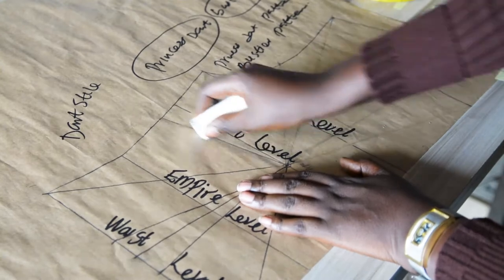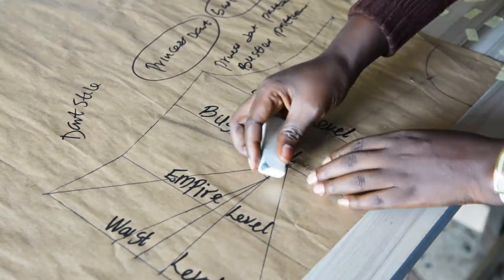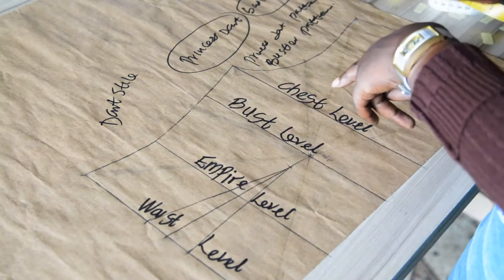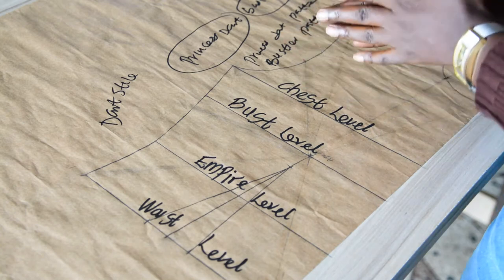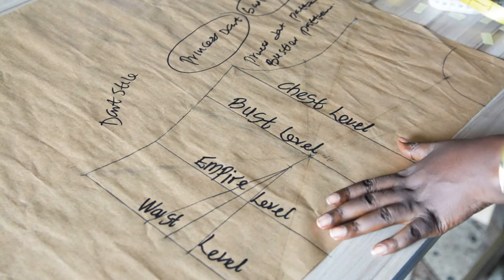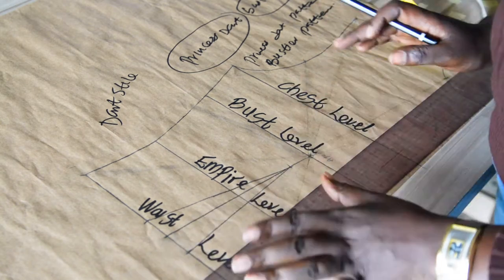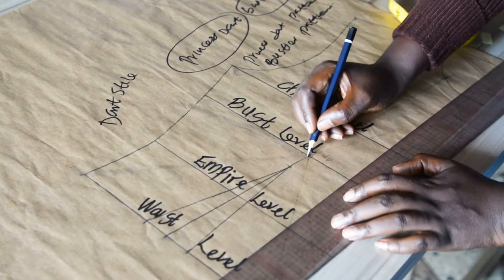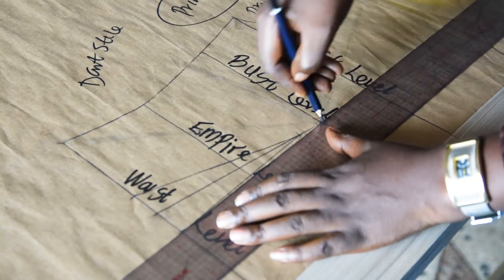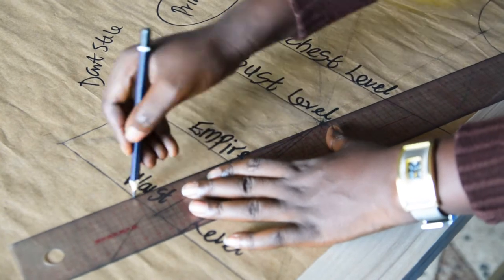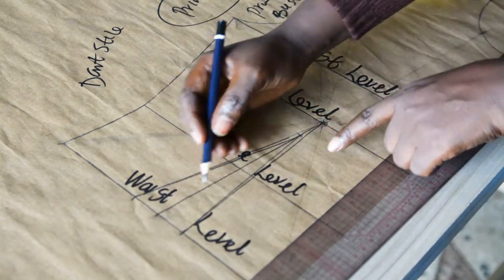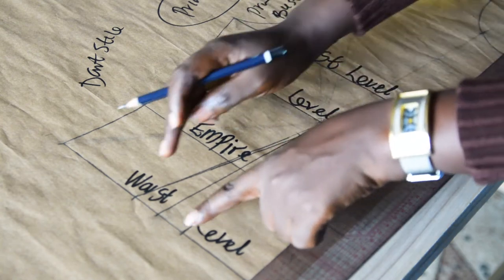We have two compound words together: princess dart and bustier. We will be working on the princess dart first before going to the bustier pattern part. What I will be doing next is to extend my dart to the apex. This is the apex point I marked out earlier, and I will be extending my waist dart to the apex — connecting the dart straight to the apex point.